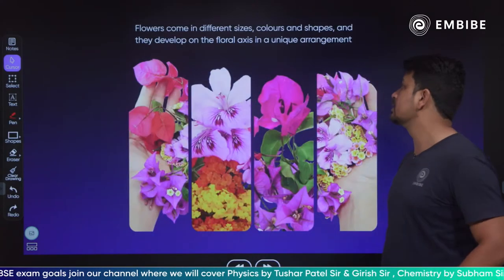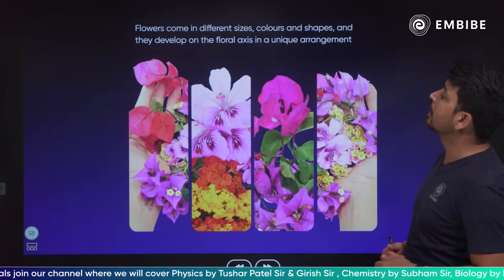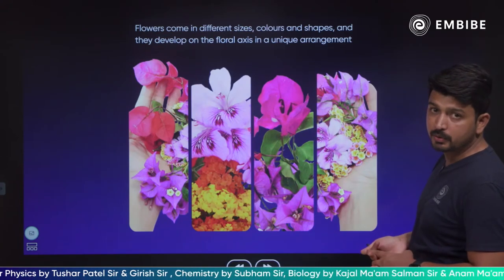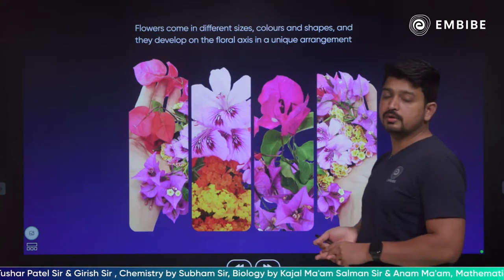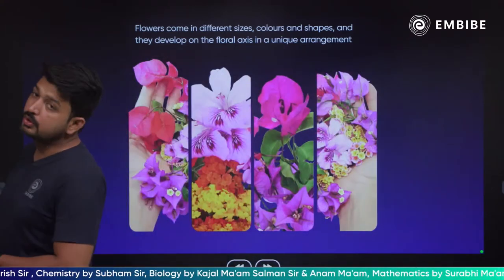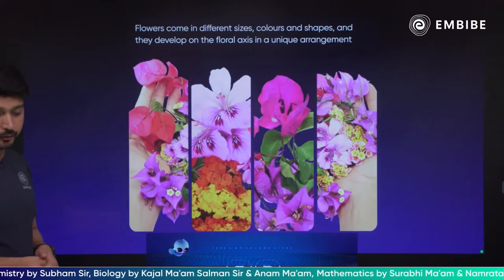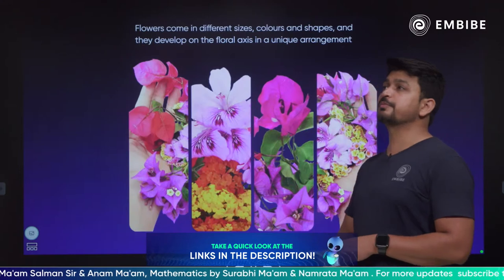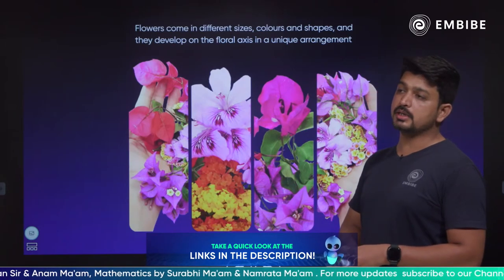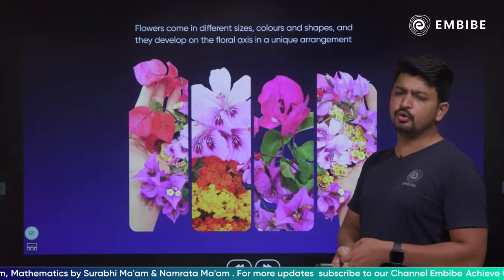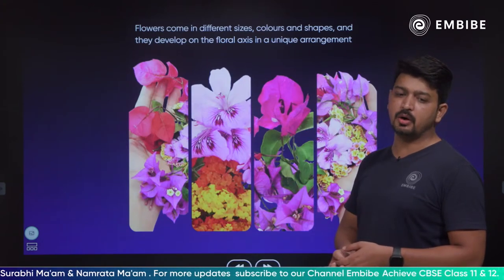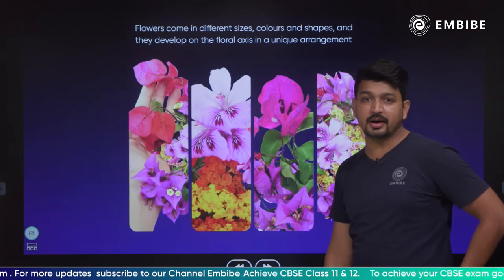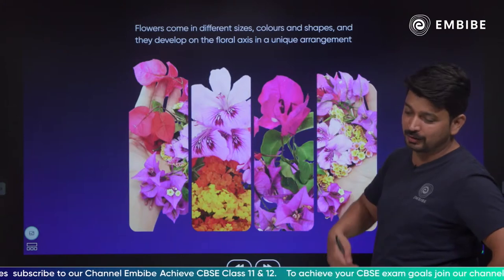In today's class, flowers come in different sizes, colors and shapes and they develop on the floral axis in a unique arrangement. Basically, a flower is a reproductive organ — we all know that. The flower is so beautiful, right? Because it is a reproductive organ, it is there to attract animals so that they can spread out their seeds. That's why the flower is so attractive in nature.